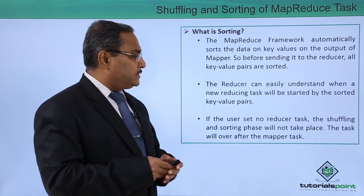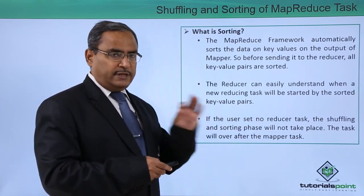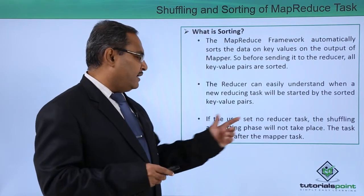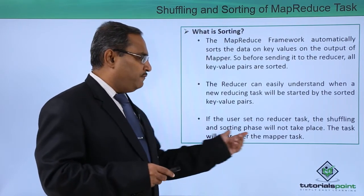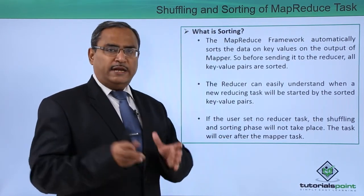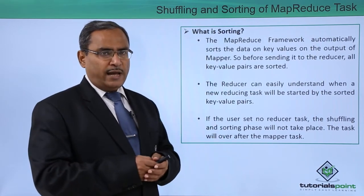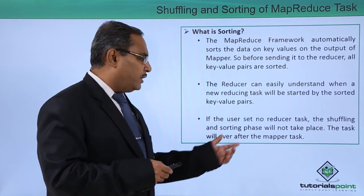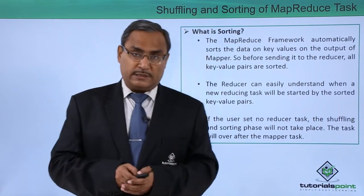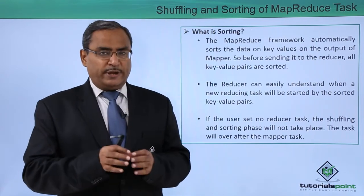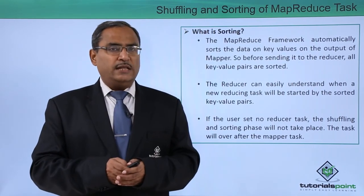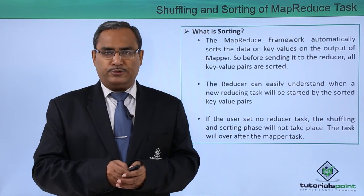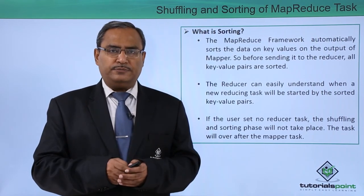If the user sets no reducer task, the shuffling and sorting phase will not take place. If there is no reducer, there is no need for any shuffling or sorting — the task will be complete after the mapper task. In this discussion, we have covered what shuffling and sorting are in MapReduce. Thanks for watching this video.